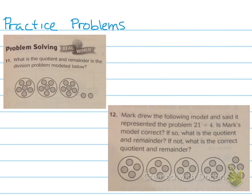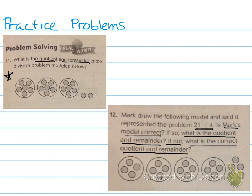Practice problems. Remember write down the important information. In this case, what is the quotient and remainder? Please draw this model so when we go over it with your classmates in class we can talk about it. Number 12: Mark drew the following model and said it represented the problem 21 divided by 4. Is Mark's model correct? If so, what is the quotient and remainder? If not, what is the correct quotient and remainder? You need to figure out whether this model actually represents 21 divided by 4, yes or no. If it is, write the correct quotient and remainder. If it's not, I would recommend drawing the correct model and finding the correct quotient and remainder. Alright have a great night.